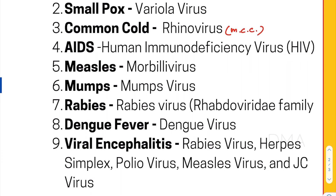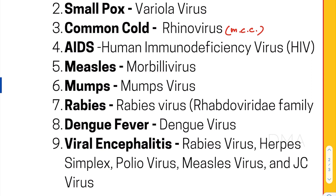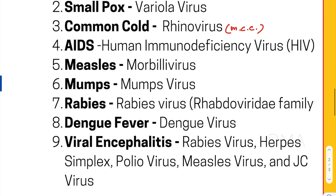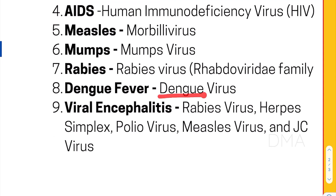Then there is measles, caused by measles morbilli virus — morbilli being the genus name of the measles. Then mumps is caused by mumps virus. Rabies is caused by rabies virus of the Rhabdoviridae family and of the genus Lyssa. Then dengue fever is caused by dengue virus.